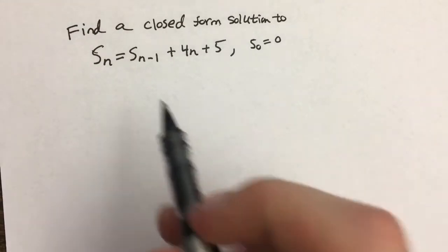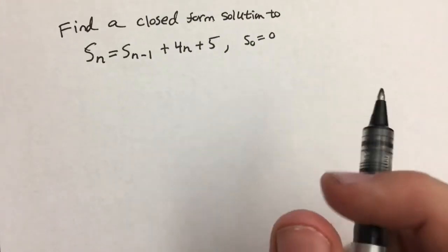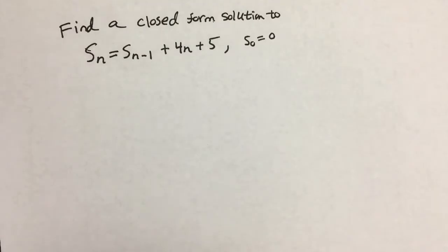All right, so we want to find a closed form solution for this recurrence relation and this initial condition. The way we're going to do this is we're just going to start writing out terms and not simplify them all the way and see if we can find a pattern.